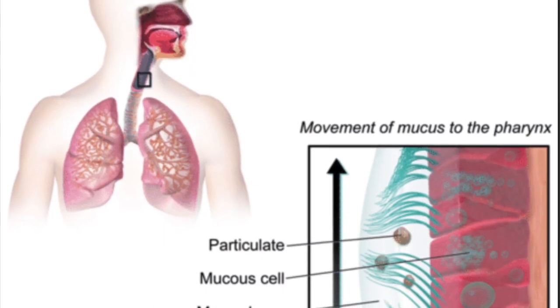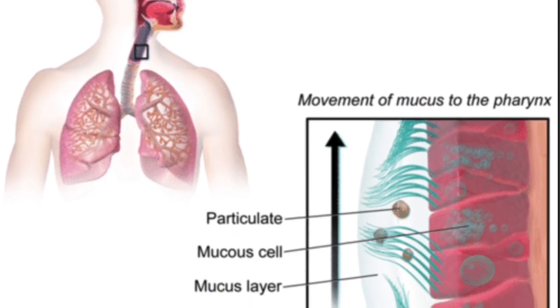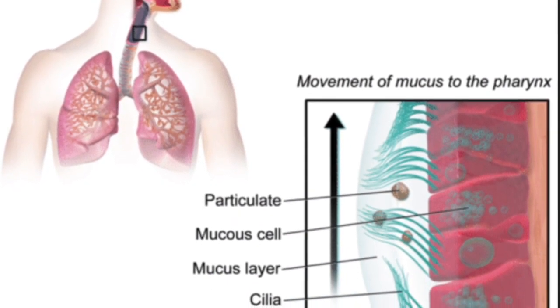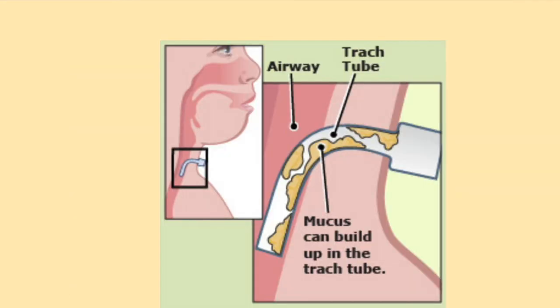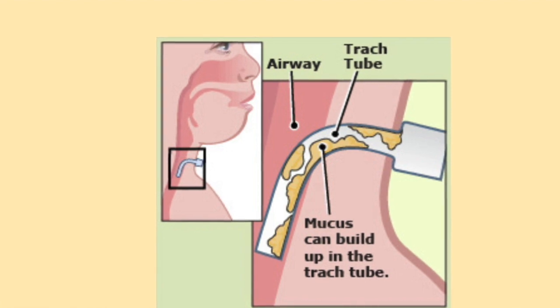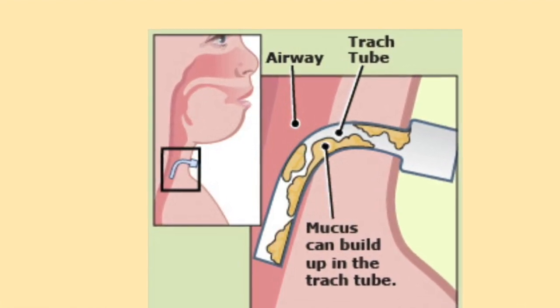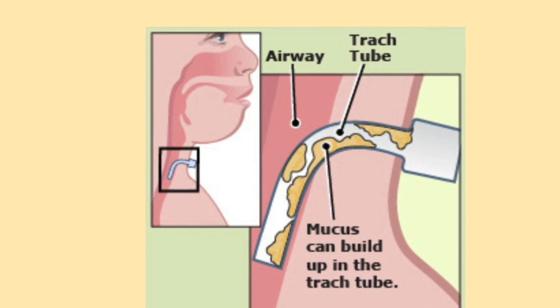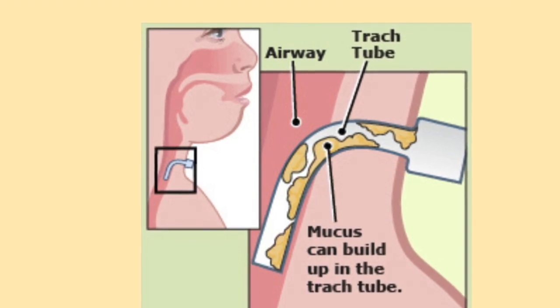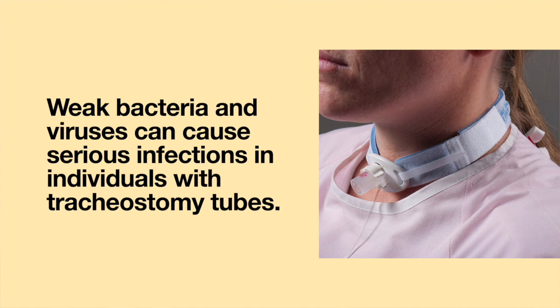Third, a tracheostomy tube disrupts how the airway functions. When a virus or bacteria is present, it often gets caught in mucus. Normally, the mucus is coughed up. With a tracheostomy tube, the mucus may not be completely cleared. Part of it may remain in the tracheostomy tube. This may allow the bacteria to continue to live and reproduce, which may lead to infection.